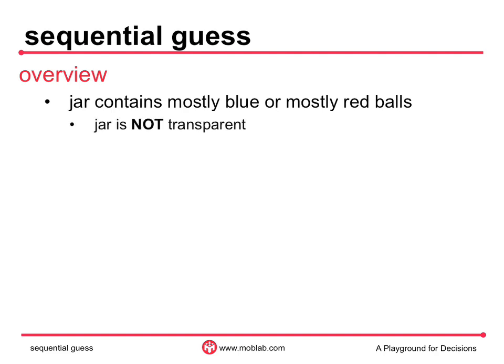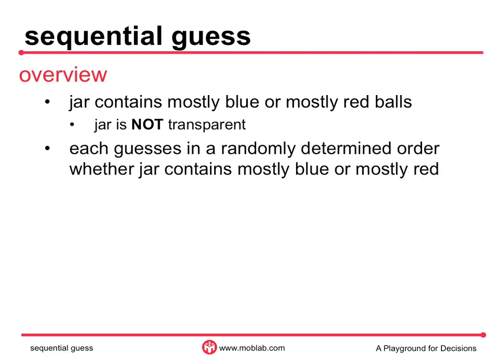Unfortunately, the jar is not see-through, so you can't tell by looking at the jar. Let's try a different approach. Each round, the computer randomly orders the members of your group, and each group member makes her guess in that order.